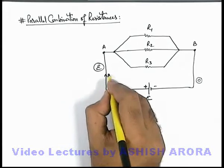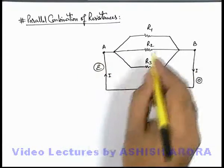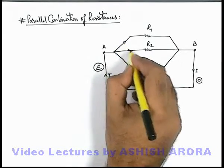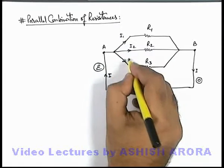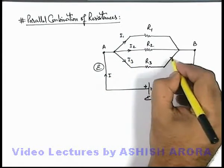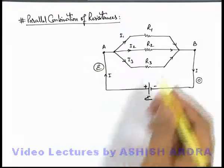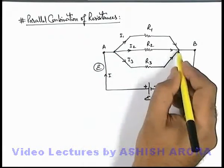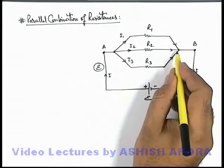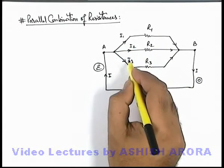If a current i flows through the battery to be supplied to the group of resistances, then this current will be divided into the 3 resistances as i1, i2, and i3, and finally it will combine to produce the same current i, as charge is conserved. In this situation, we know that the potential difference across the 3 resistances is the same, so we can easily calculate these values.